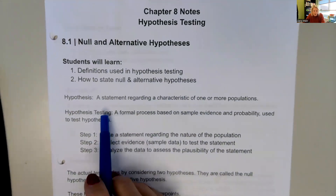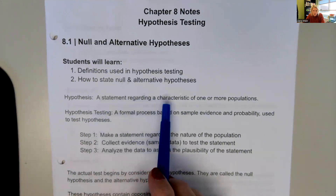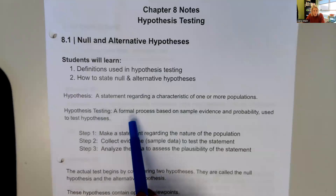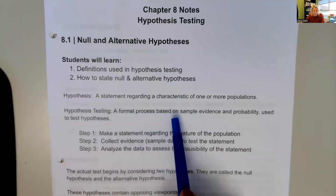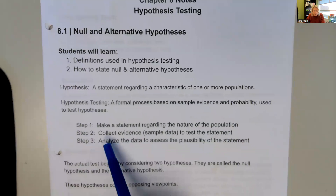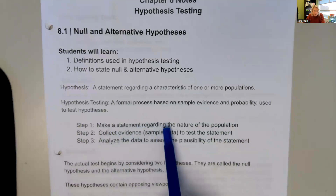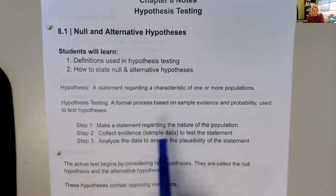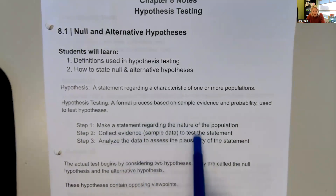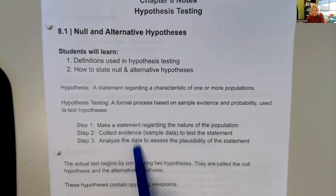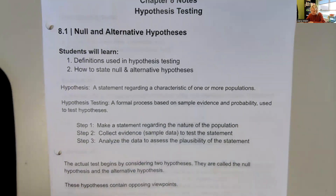A hypothesis is a statement regarding a characteristic of one or more populations. The hypothesis test is a formal process based on sample evidence and probability used to test hypotheses. So we're going to make a statement regarding the nature of the population — what we think is true — then we're going to collect evidence, some sample data, and we're going to test the statement and analyze the data to assess the plausibility of the statement.